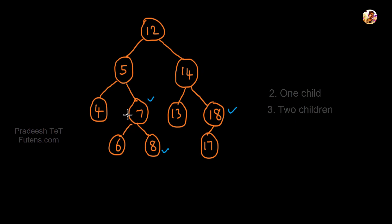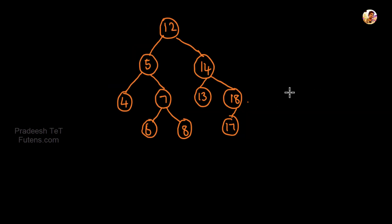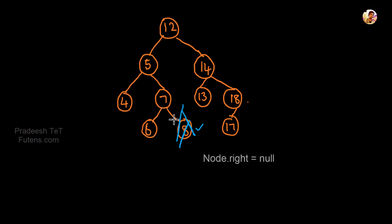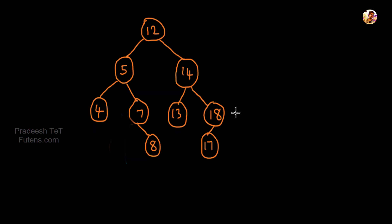Let's try scenario one. We delete a node. On the right child side, if the child pointer is null, you can simply delete it. This is the case where the node has no children — a leaf node — so we just remove it.